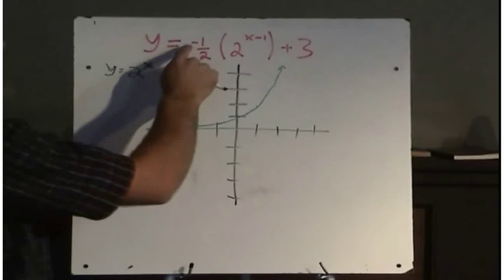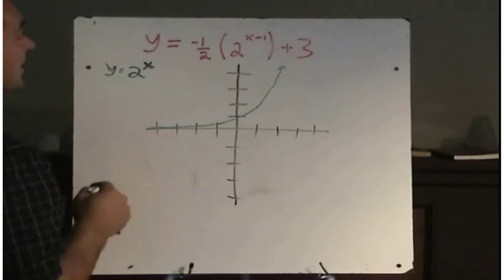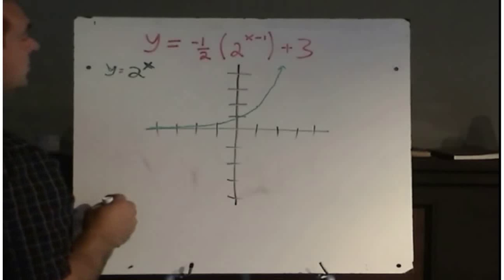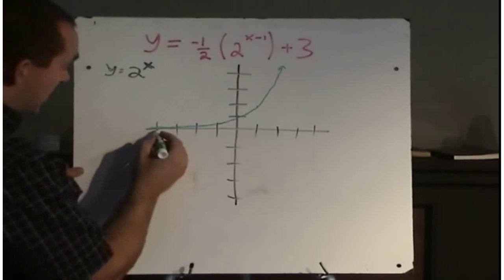I've got a negative here, so that's a reflection in the x-axis, and y is replaced with minus y. So my new graph,